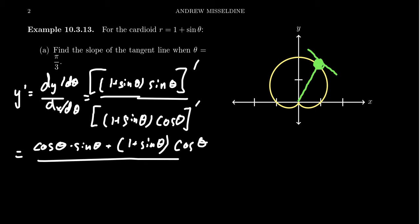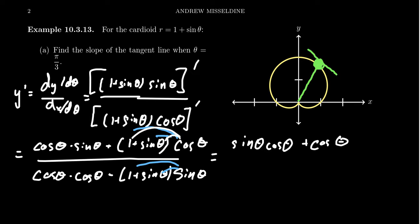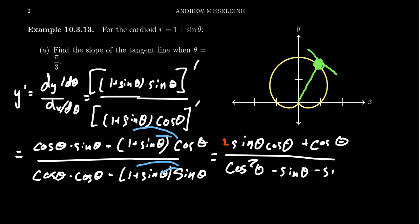On the derivative in the denominator: the derivative of 1 plus sine is cosine again, times cosine, and then 1 plus sine theta times the derivative of cosine, which is negative sine. Distributing across the sum on top and bottom: on top we get sine theta cosine theta, plus cosine theta when distributing cosine onto 1, plus another sine theta cosine theta — so we put a 2 in front, giving 2 sine theta cosine theta plus cosine theta. In the denominator, cosine times cosine is cosine squared, then negative sine distributed onto 1 gives negative sine, and sine times sine gives negative sine squared.